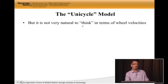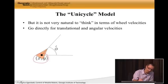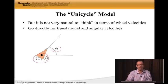The unicycle model overcomes this issue of dealing with unnatural or unintuitive terms like wheel velocities. Instead, what it's doing is saying, you know what? I care about position. I care about heading. Why don't I just control those directly?